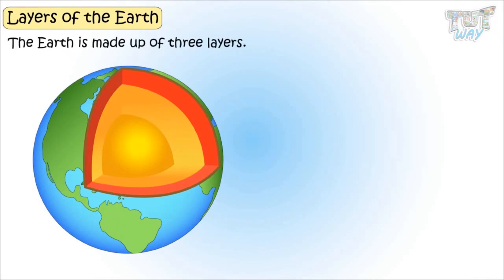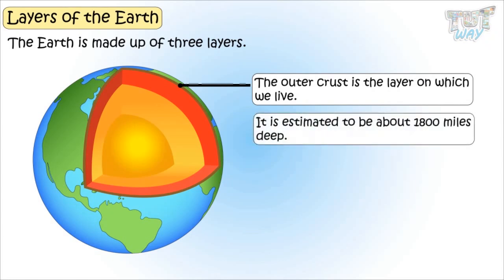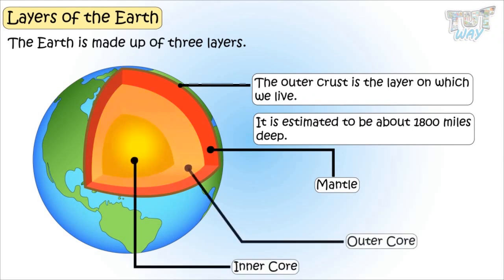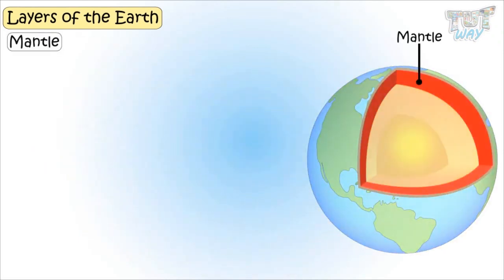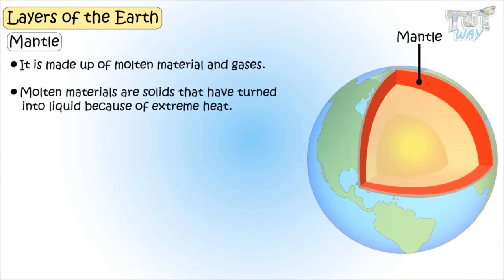The earth is made up of three layers. The outer crust is the layer on which we live, and it is estimated to be about 1,800 miles deep. Then there is the mantle, and then the core — the inner and outer core. The mantle is made up of molten material and gases. Molten materials are solids, like rock, that have turned into liquids because of extreme heat.